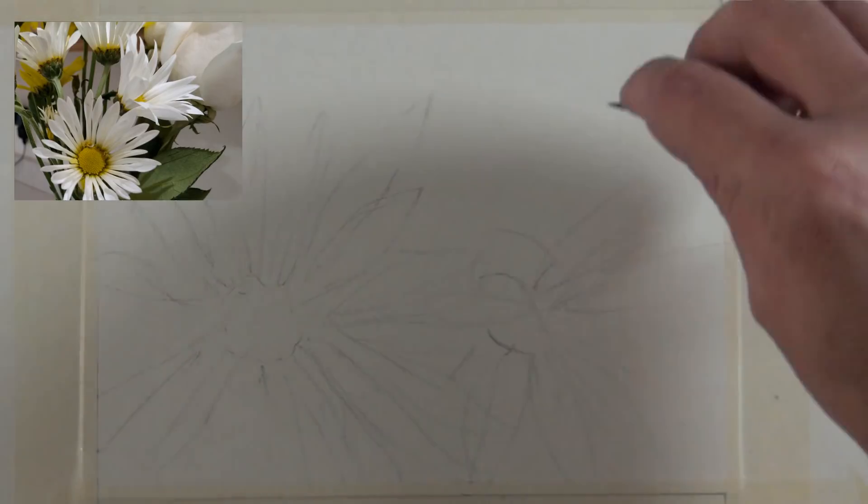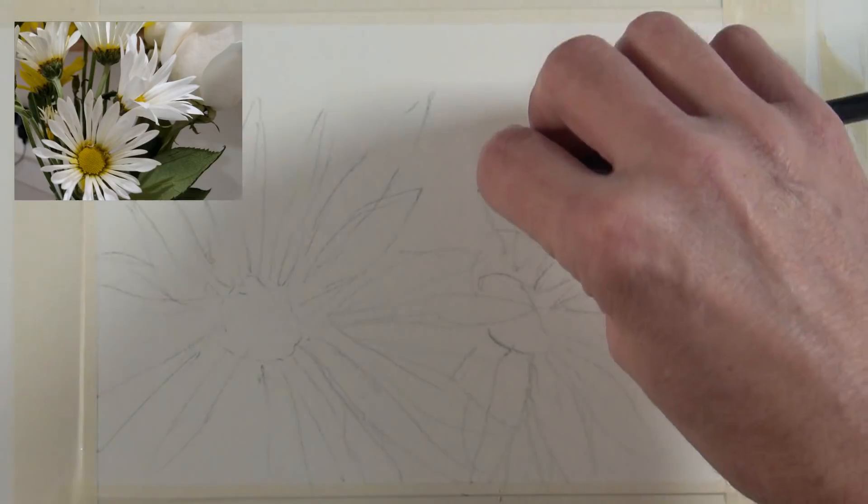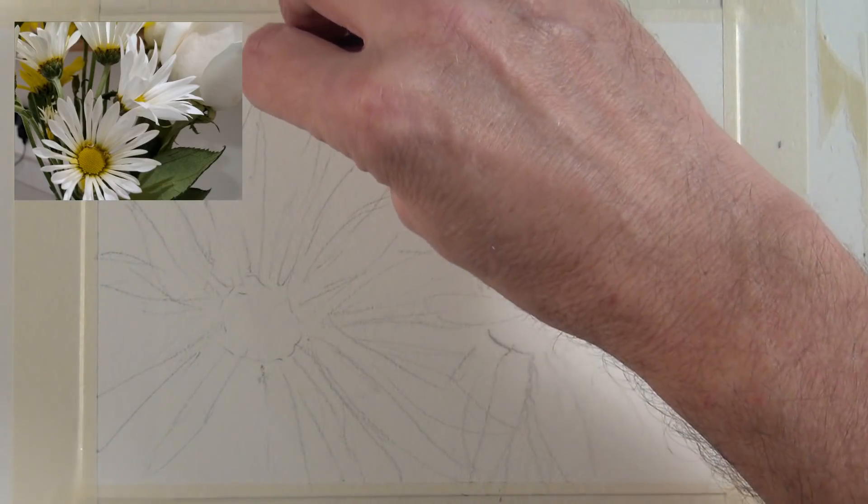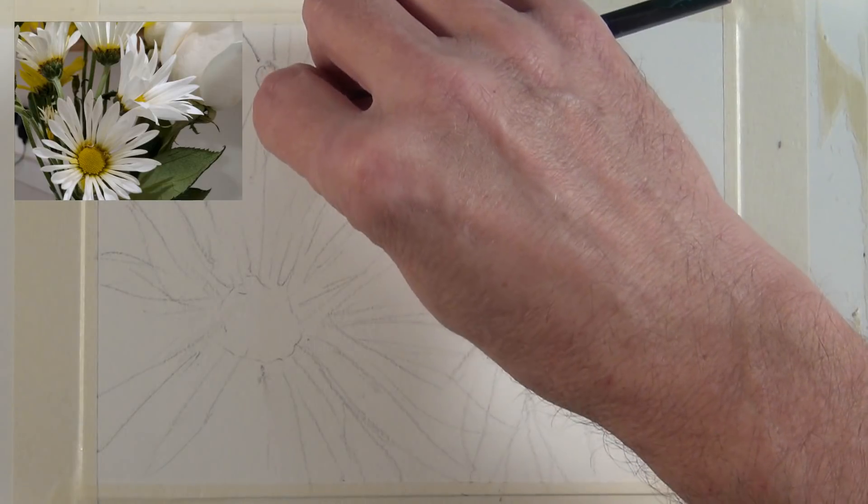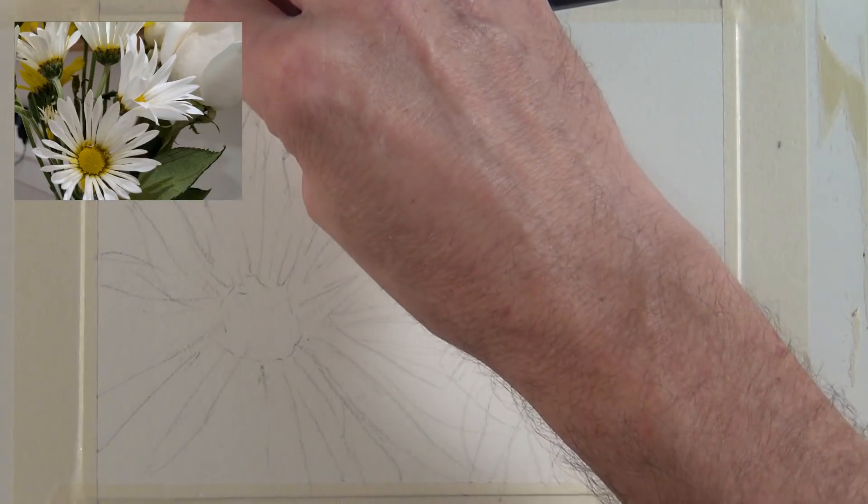You can see I'm not trying to copy one of the photo, which is turned completely sideways. I want to see more of the center. And I radiate those petals out from the center. That's how I start with a lot of these. I put the center in and radiate the petals out. And these petals start to overlap and go underneath one another, and that creates some interesting shapes as those petals interact.